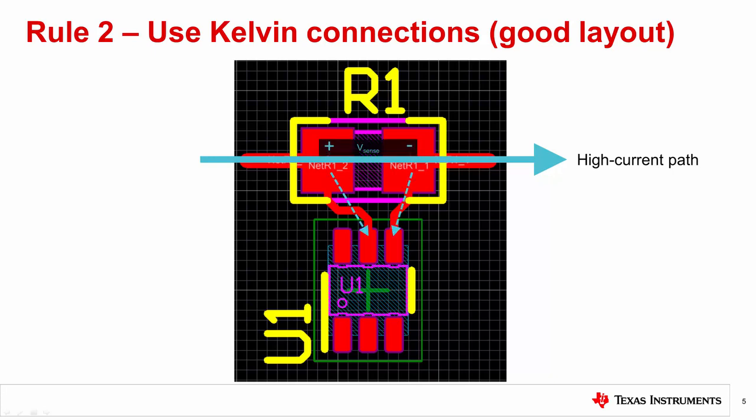There are Kelvin connections from the resistor pads to the amplifier which provide the differential voltage to be measured. Trace lengths are very short. The current flowing through these traces is minimal, usually around tens of microamps, so the voltage loss on the path from the resistor to the monitor is very low.